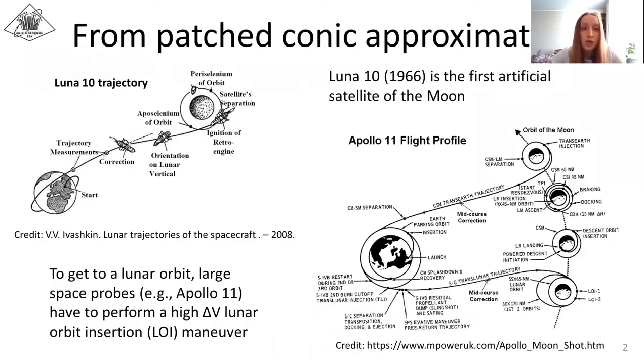The search for trajectories from the Earth to the Moon has been the subject of many scientific works. The first simple trajectories to the Moon were obtained by the patched conic approximation method.